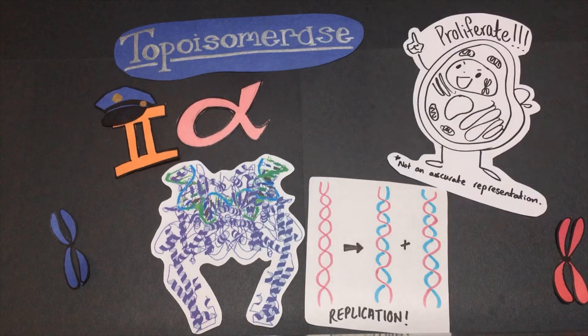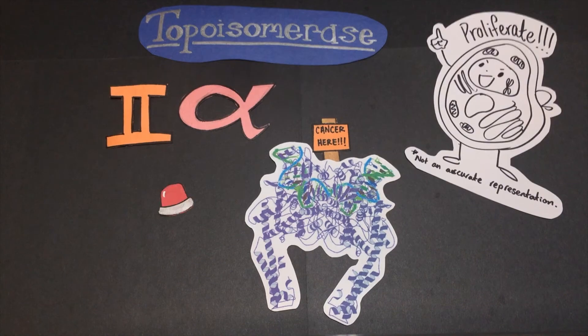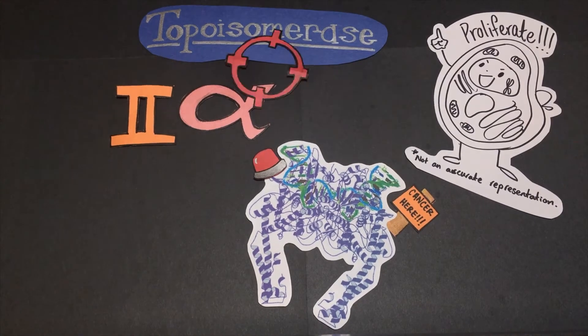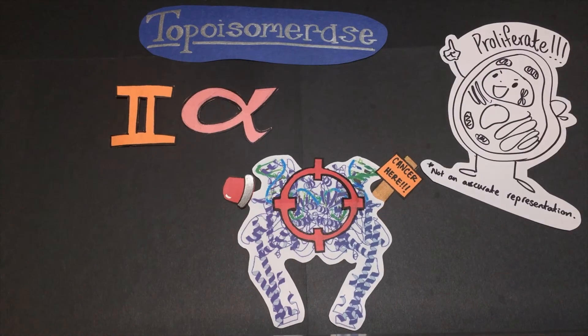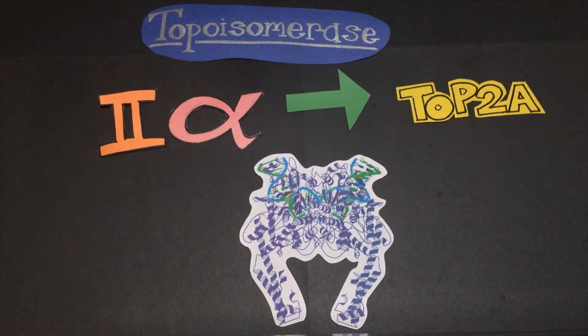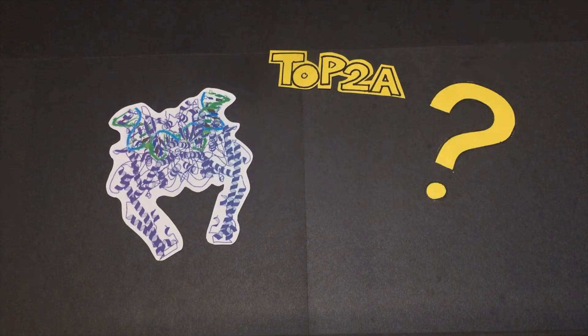This makes topoisomerase 2 alpha a cancer cell marker and the target of some really cool anti-cancer drugs, and its function is something really worth looking at to me. For the sake of my breath, we'll start calling topoisomerase 2 alpha Top 2a. I won't really be mentioning other types of topoisomerases from here on out, so to begin, what does Top 2a do and why should I care about it?